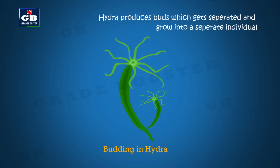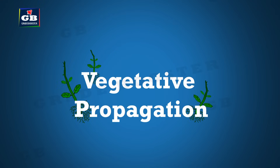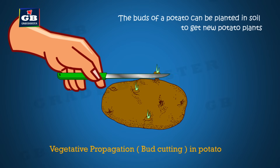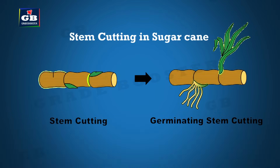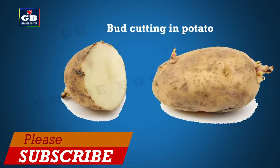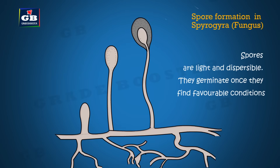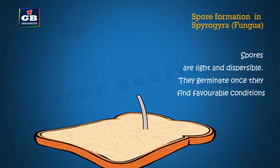Budding: Hydra produces buds on their bodies; these buds get separated and can grow as individuals — this is budding. Vegetative propagation: In many plants, cut body parts can be planted in soil to get new plants. Stem cuttings in roses and sugarcane, root cuttings in carrot, and bud cuttings in potato are examples. Spore formation: Rhizopus, a fungus, produces spores. If these spores find suitable conditions, they germinate into new organisms.